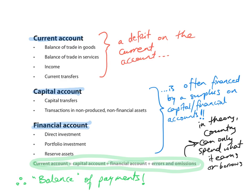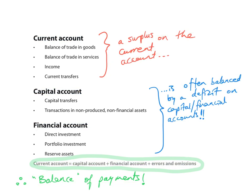In theory, a country can only spend what it earns or borrows. So if there's a deficit on the current account, this must somehow be financed, and it's often financed by a surplus on the capital or financial account — that's why it's called the balance of payments. Similarly, a surplus on the current account is often balanced by a deficit on the capital and financial accounts.